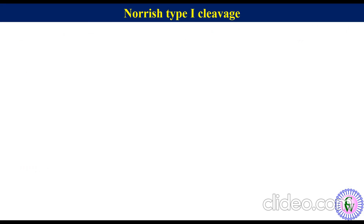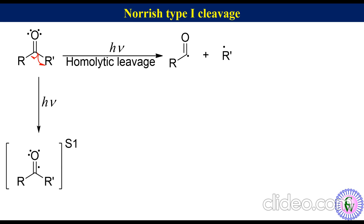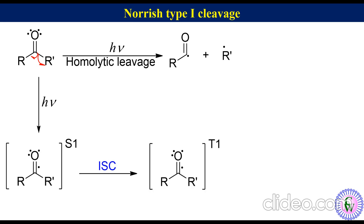Norrish Type 1 reaction is a photochemical reaction in which an aldehyde or ketone upon irradiation undergoes homolytic cleavage of the C-C sigma bond alpha to the carbonyl to produce acyl and alkyl radicals. After absorbing a photon, the molecule goes to an excited singlet state which, by the process of intersystem crossing, may go to the excited triplet state. Either state may undergo alpha cleavage to produce acyl and alkyl radicals.